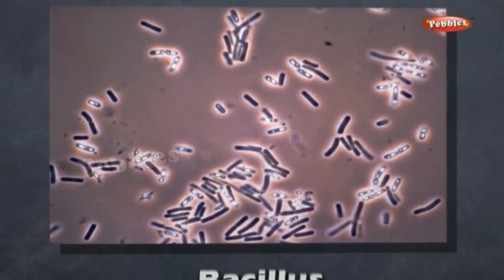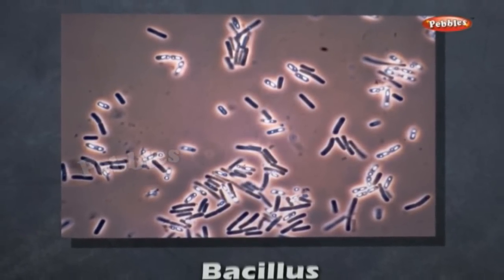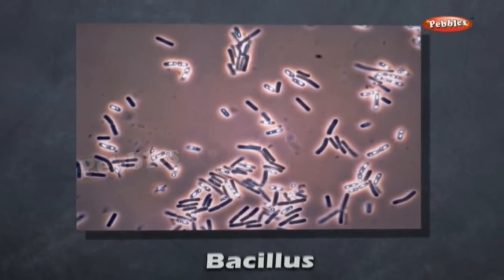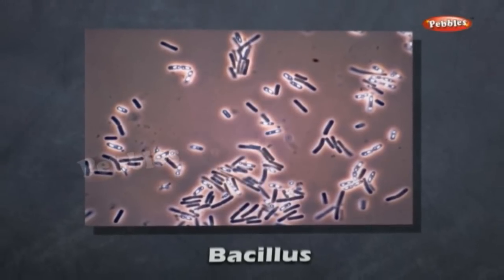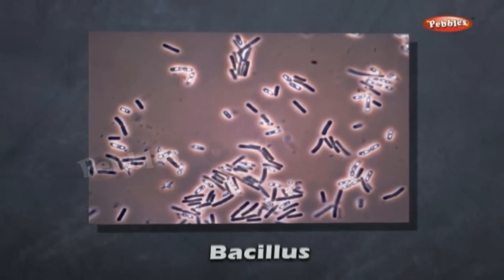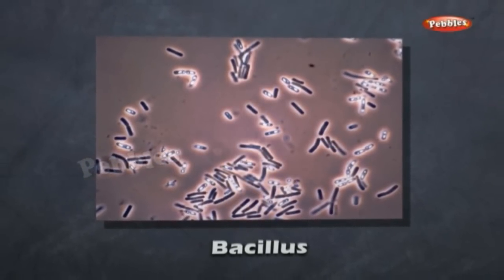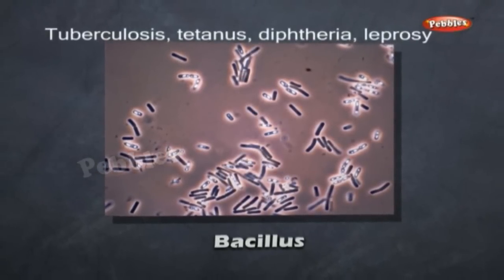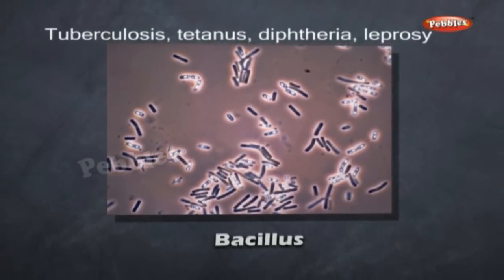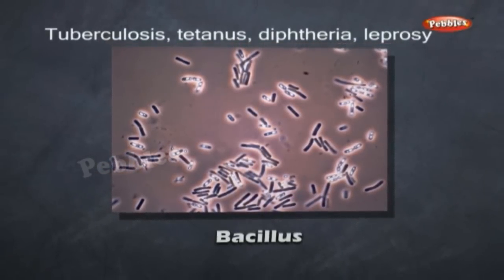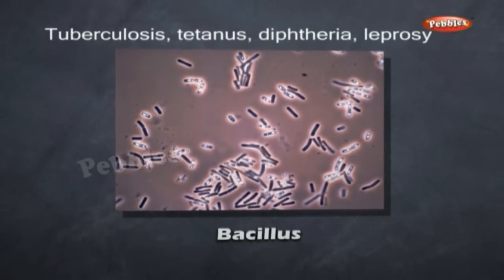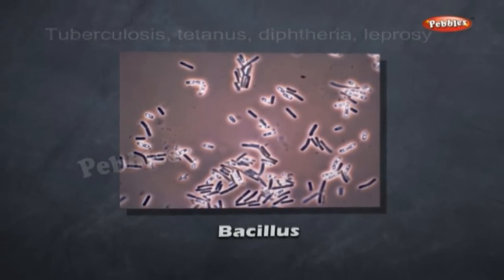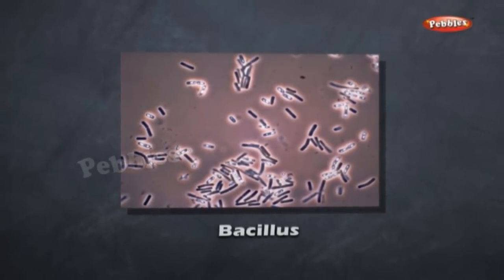Bacillus bacteria are rod-like, with or without flagella. They may occur singly or form a filament. Certain notorious diseases in man, such as Tuberculosis, Tetanus, Diphtheria, and Leprosy, are caused by Bacillus bacteria.